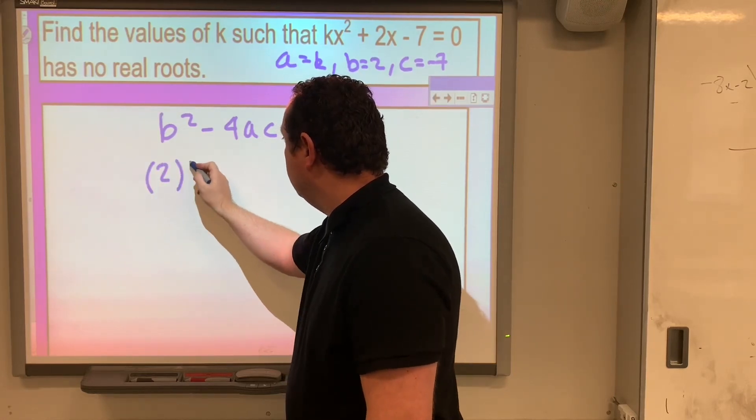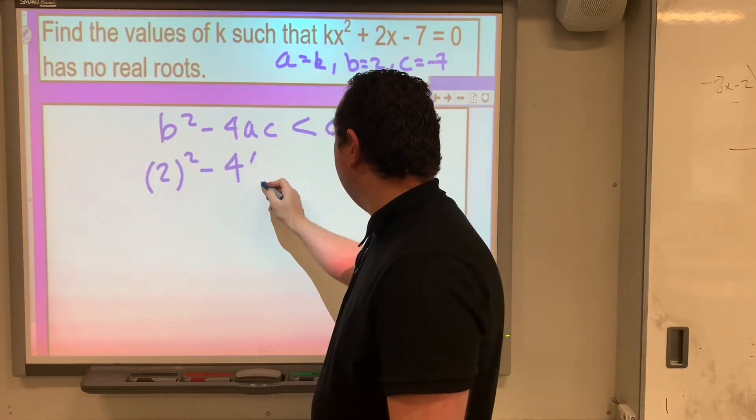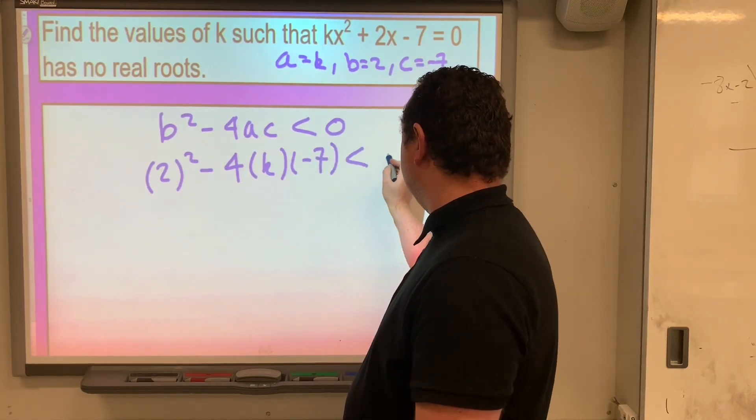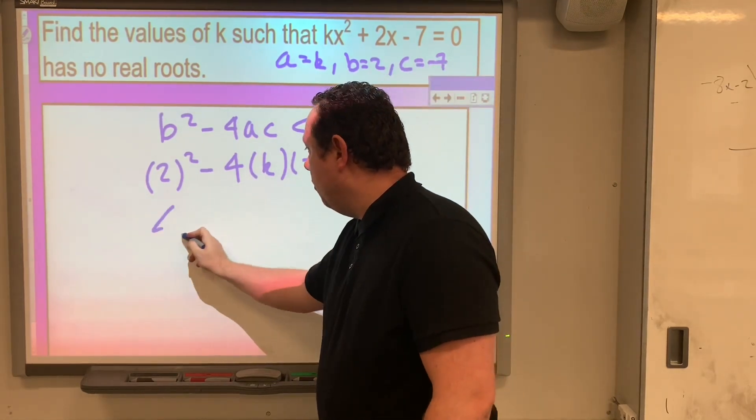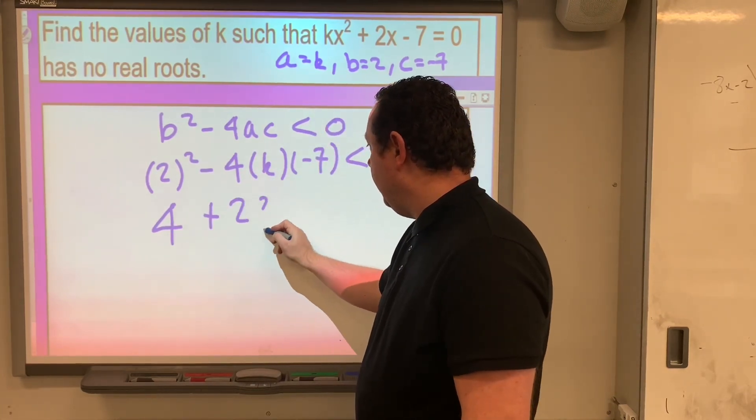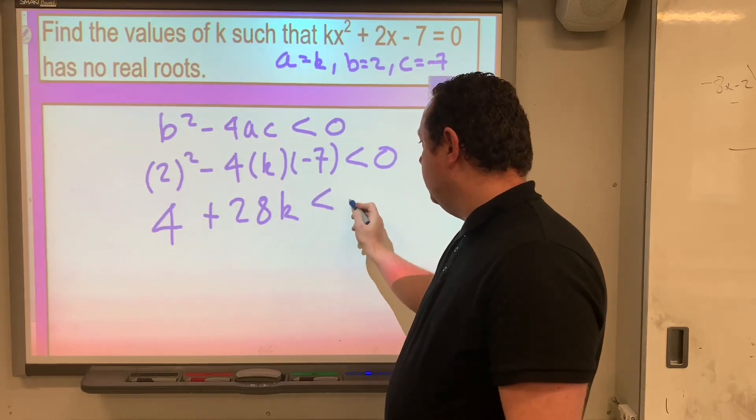So substituting that in, we've got 2 squared minus 4 times k times minus 7 is less than 0. That's 4, 4 times 7 is 28, so it's plus 28k is less than 0.